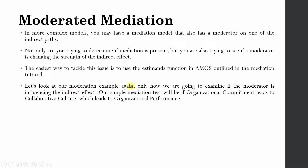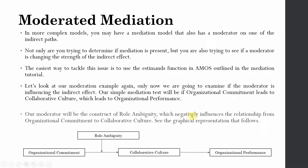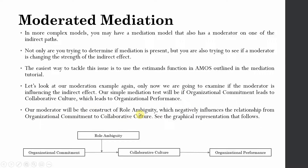Let's look at our moderation example again. Now we are going to examine if the moderator is influencing the indirect effect. Our simple mediation test will be whether organizational commitment leads to collaborative culture, which leads to organizational performance. Our moderator is role ambiguity, which negatively influences the relationship from organizational commitment to collaborative culture. This is the graphical representation of the relationships we want to assess: organizational commitment affects organizational performance through collaborative culture, while role ambiguity moderates the relationship from organizational commitment to collaborative culture.